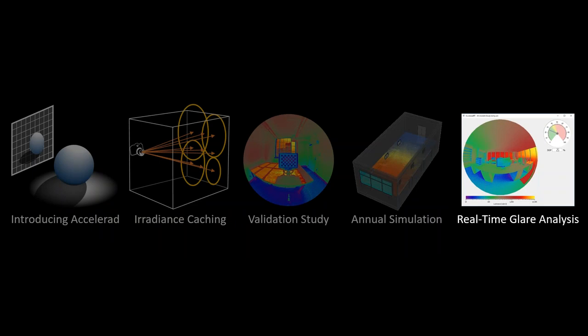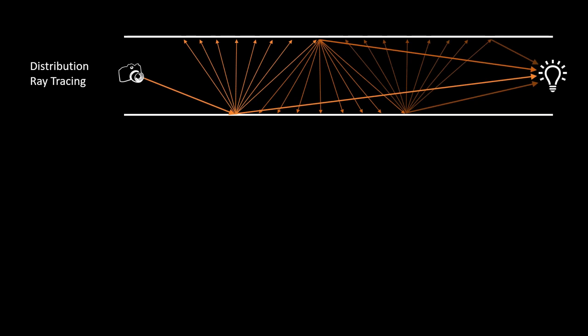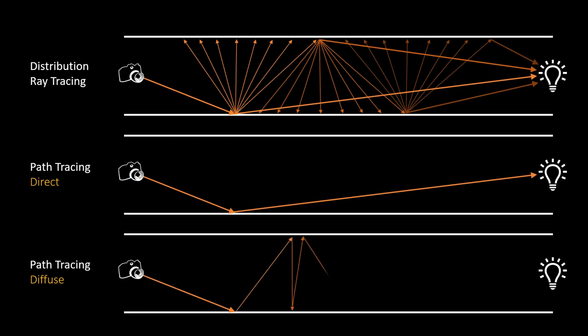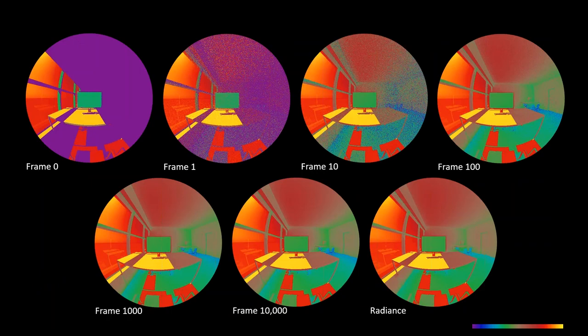For interactive simulations, I needed to abandon distribution ray tracing—where the number of rays grows exponentially with bounces—and instead use path tracing. There is still a direct calculation, but the diffuse calculation follows one light path to its conclusion. This diffuse calculation process can be repeated as an animation, continuously adding more paths. The first frame is just the direct component; frame one introduces one diffuse path; each additional frame averages in one more diffuse calculation, until by frame 10,000 the result looks very similar to a Radiance simulation.